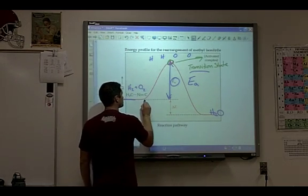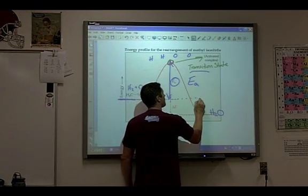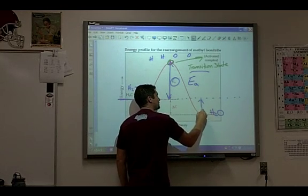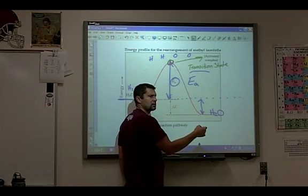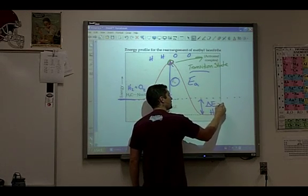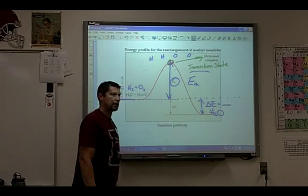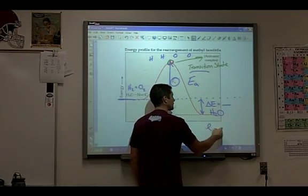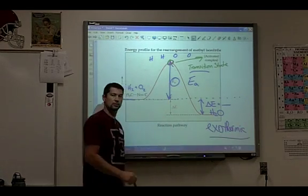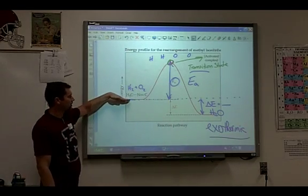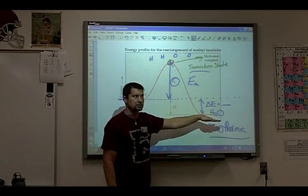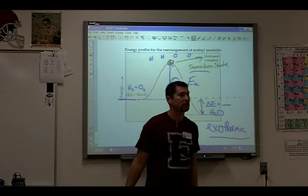And then notice, this is where I started. This is where I ended up. So didn't I end up losing energy? So this change in energy is a negative value. And we call that what? Exothermic. I started here. I ended up down here. So I lost energy. Energy was released, wasn't it? I think we kind of saw that.